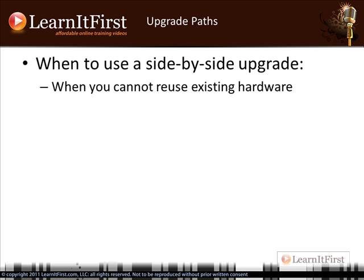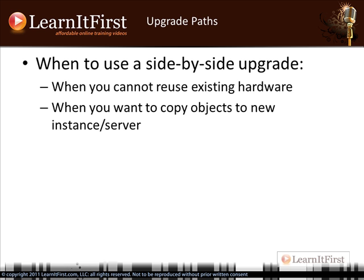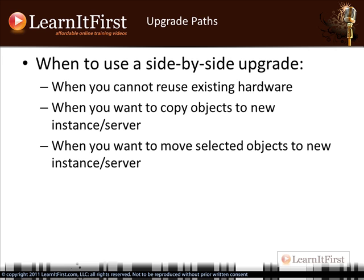You have to have a good backup to be able to roll back. Use a side-by-side upgrade when you're moving to a new server — you can't reuse the existing hardware, perhaps after seven years of running SQL 2005. You say you want to install a brand-new server, so you requisition one and get it ready. Also use it when you want to copy objects to a new instance or server, or when you want to move only selected objects, like just that asset database.